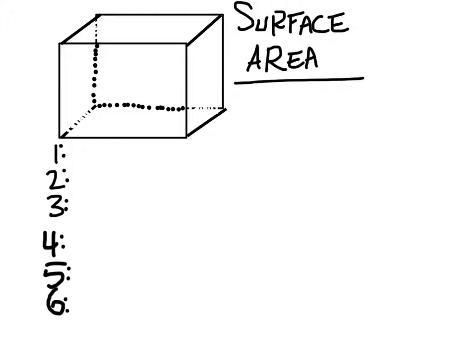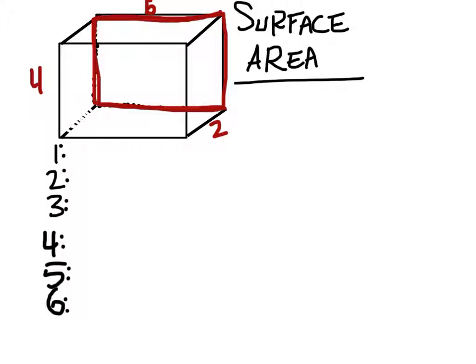Let's look at this back surface first and consider some measurements. Let's say that the height is 4, the length is 6, and the width is 2. In that case, this back surface has a 4 here — you've got a 6 by 4 rectangle. So 6 times 4 is going to give you 24 square units.